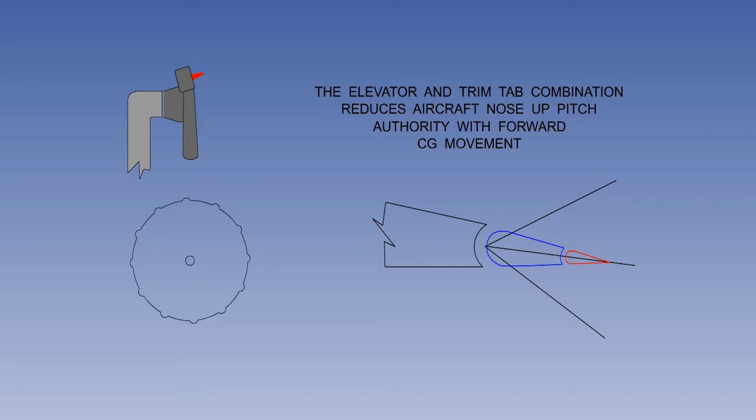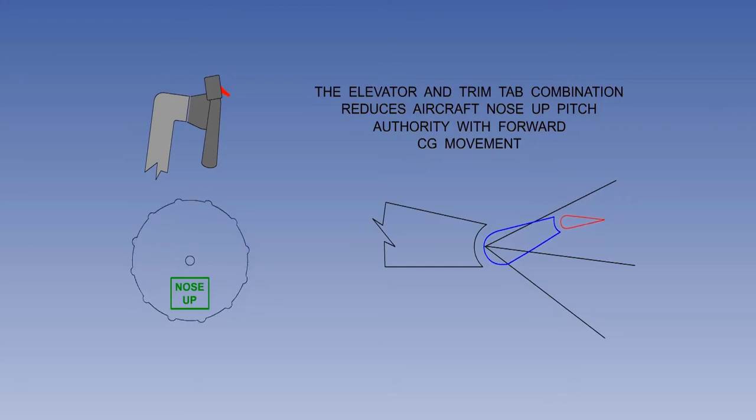60 degrees total elevator travel will always be available. Let us assume, once again, because of a forward CG there is a requirement for the pilot to trim the aircraft nose-up. You can see that there is reduced aircraft nose-up pitch authority from the elevator with an aircraft trimmed with a forward CG. This reduction in aircraft nose-up pitch authority might make it difficult for the pilot to flare the aircraft for landing.